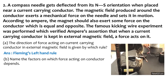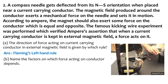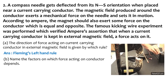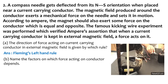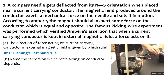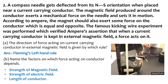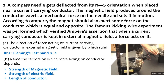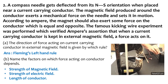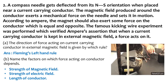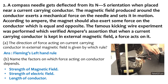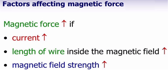Question B: name the factors on which the force acting on the conductor depends. If you need to increase or decrease the force, you should change the current or the magnetic field. The factors that affect the force acting on the conductor are: strength of the magnetic field, strength of the electric current, and length of the conductor. The force increases if the current, length of the wire, or the magnetic field strength increases.